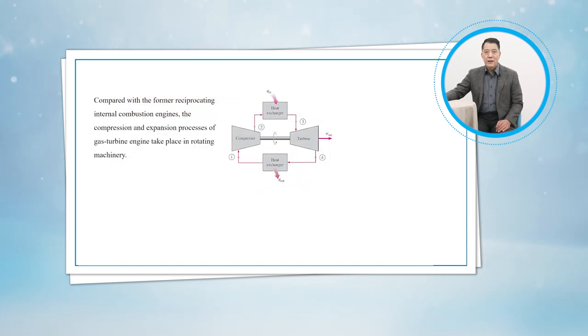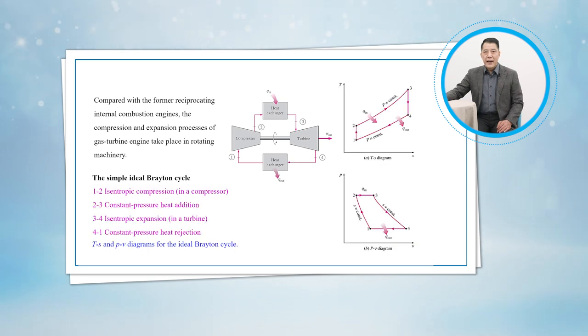Compared with the former reciprocating internal combustion engines, the compression and expansion process of gas turbine engines take place in rotating machinery. The ideal cycle that the working fluid undergoes in this closed loop is the Brayton cycle, which is made up of four internally reversible processes.